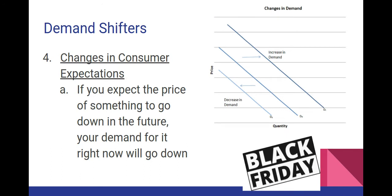Fourth is changes in consumer expectations. The best way to explain this is with the example of Black Friday. If you expect the price of something to go down in the future — like Black Friday — your demand for that product right now will go down. If it's September and you know Black Friday is coming in November, you expect the price to drop in two months, so you just wait. That causes a decrease in demand right now.